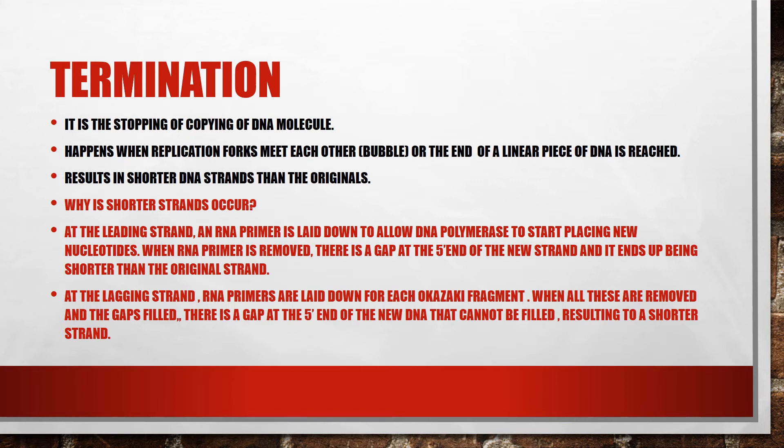At the lagging strand, RNA primers are laid down for each Okazaki fragment. When all these primers are removed and the gaps are filled, there is a gap at the 5' end of the new DNA that cannot be filled, and this results in a shorter strand of newly formed DNA.